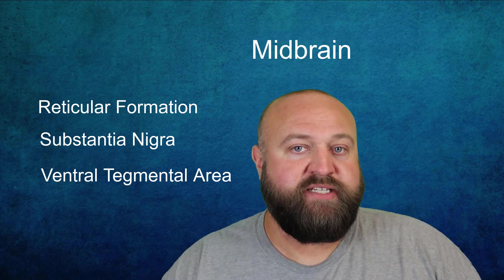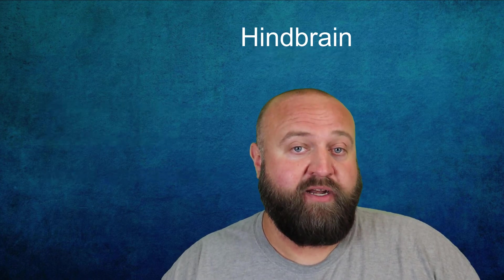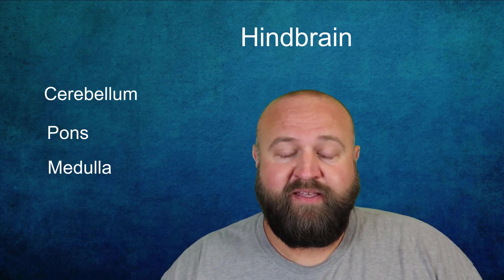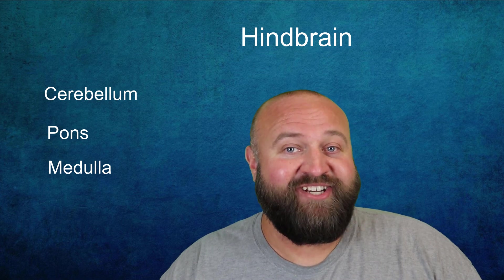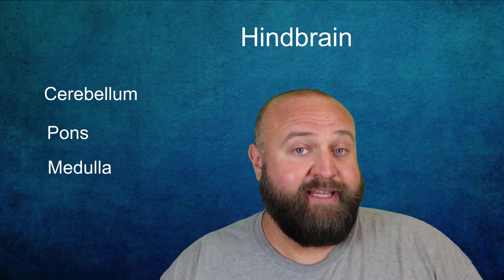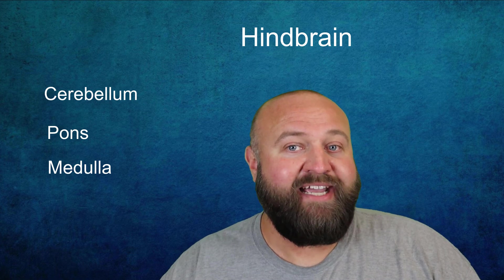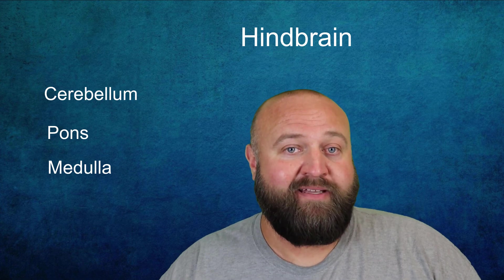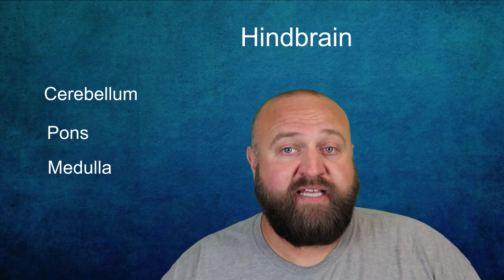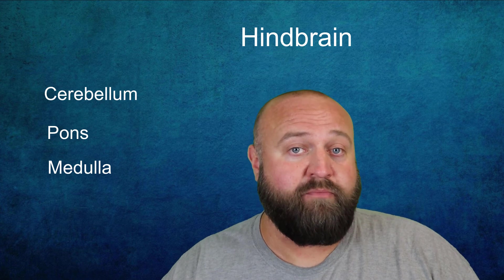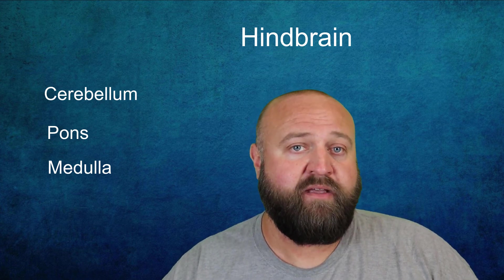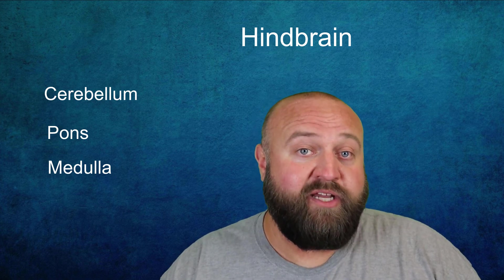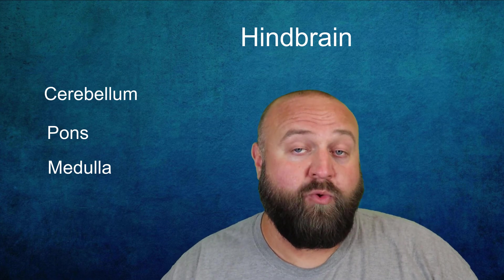The last three structures are all part of the hindbrain: the cerebellum, the pons, and the medulla. The cerebellum is located at the back of your head, just below the occipital lobe. Its name means 'little brain,' and it has one of the highest concentrations of neural pathways and nerve endings anywhere in your brain. It's especially important for control of muscles, tendons, joints, regulating movement, motor skills, balance, and coordination. Excessive alcohol use can especially impact the cerebellum, which explains why someone who is drunk tends to be so unbalanced and uncoordinated.